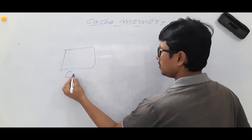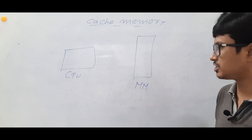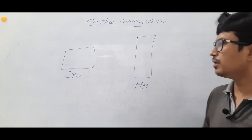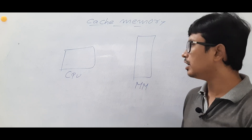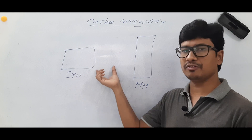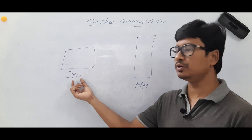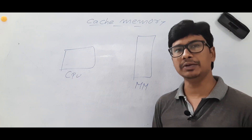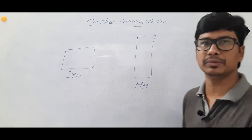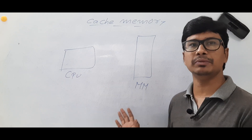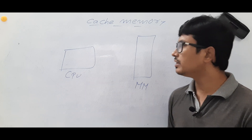We have a CPU and we have the main memory. Everyone knows that the speed of the CPU is greater than the speed of the main memory. If we do not have any faster memory between the CPU and main memory, the speed of the CPU will fall to the speed of the main memory, because whenever the CPU wants to execute an instruction it has to fetch it from the main memory.